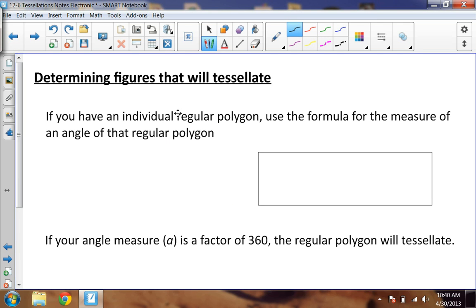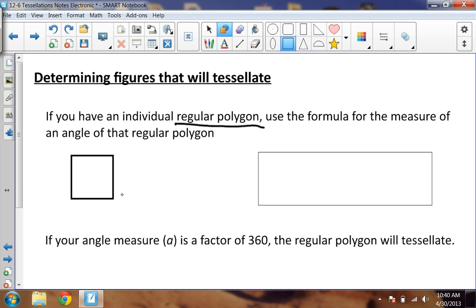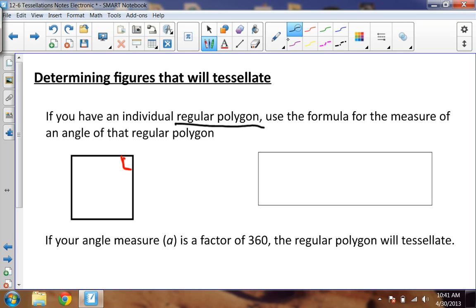Okay, you have to say whether or not a figure will tessellate. So if you have an individual regular polygon, let's say like a square that I used before here. Let me actually draw out a square. Use the formula for the measure of an angle of that regular polygon. So if I want to find the measure of this angle, which we know in a square it's 90 degrees, but let's kind of prove it.